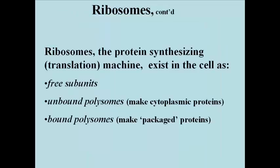You should be able to find free ribosomal subunits and polyribosomes, or polysomes. Polysomes are ribosomes assembled on a messenger RNA molecule and may be attached to membranes, meaning they're bound, or not, meaning they're unbound. Bound polysomes are attached to rough endoplasmic reticulum and the outer membrane of the nuclear envelope in eukaryotes, and are the site of synthesis of proteins destined to leave the cytoplasm — what we would call packaged proteins.